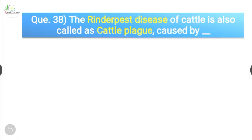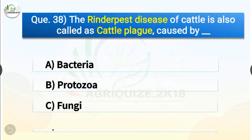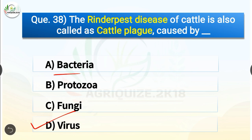Question number 38. The Rinderpest disease of cattle is also called cattle plague, caused by dash. The options are bacteria, protozoa, fungi or virus. The correct answer is option D, virus. So Rinderpest — also called cattle plague — is caused by virus, whereas Anthrax is a bacterial disease.